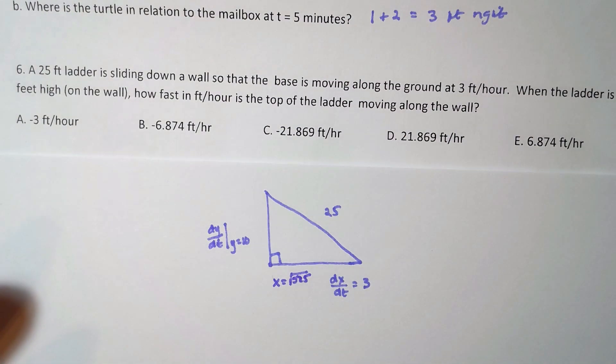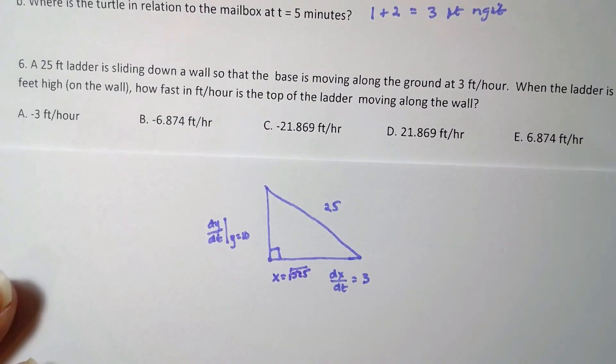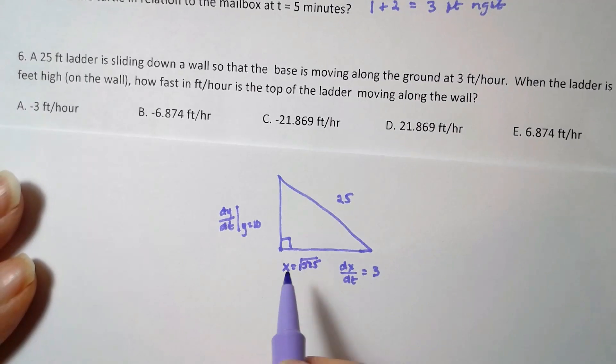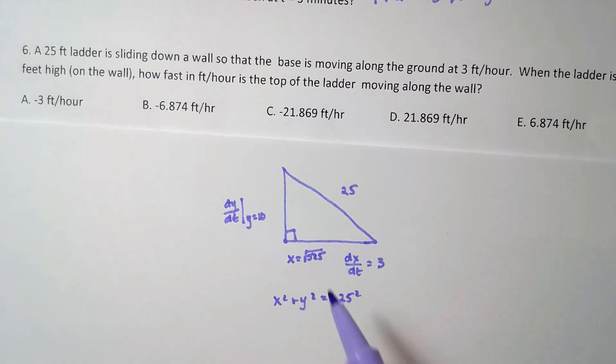So because it's a right triangle, we're going to use the formula x squared plus y squared is equal to 25 squared. This length will never change, so it's a constant. And now if we differentiate both sides, we're going to have 2x times x' plus 2y times y' is equal to zero.